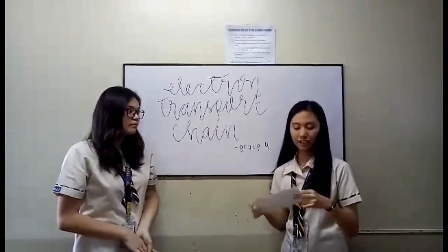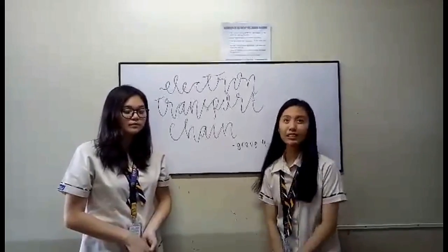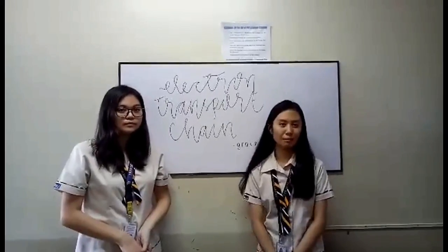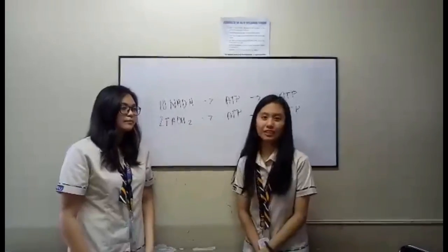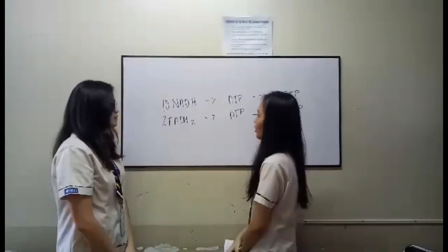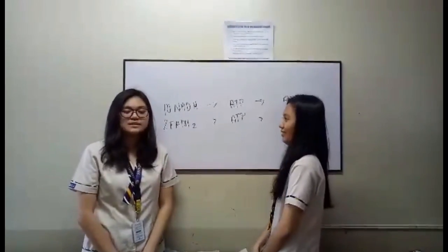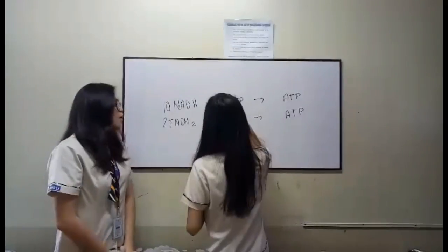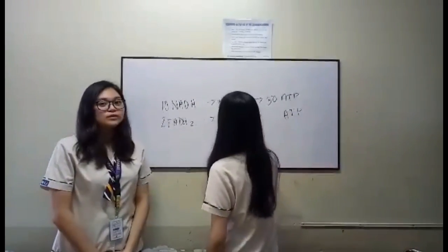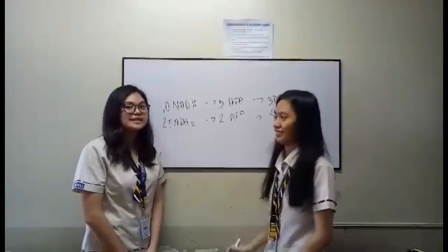ATP is used by the cells as energy for metabolic processes and cellular function. The main goal of ETC is to transport electrons to produce ATP. From glycolysis and the Krebs cycle, we now have 10 NADH and 2 FADH2. Each NADH yields 3 ATPs, giving 30 ATPs total, while each FADH2 produces only 2 ATPs because they are in a lower energy state.